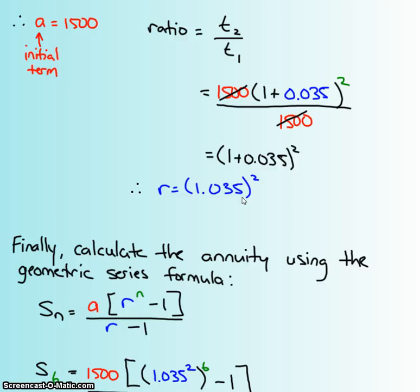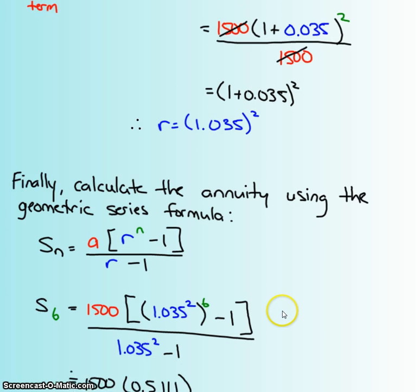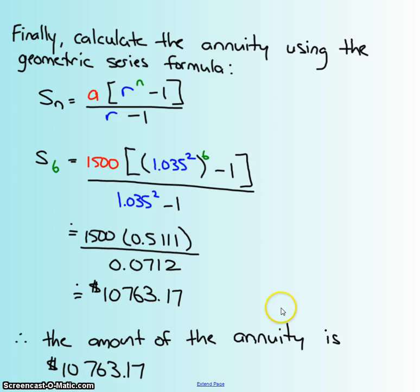Finally, what I'm going to do now is figure out the annuity using the geometric formula. So here's a geometric sum formula, and I needed my a, which I got. I need an r, which I just found. My n is going to be 6 years, and then I have all the rest.